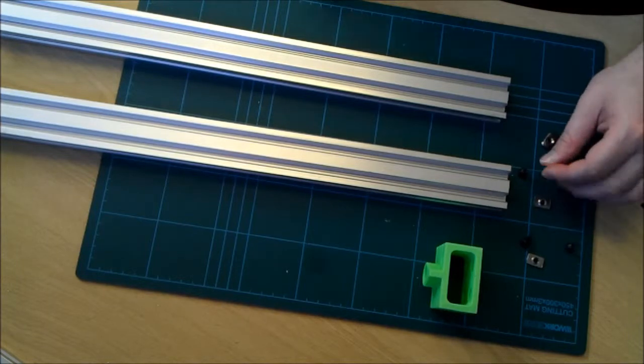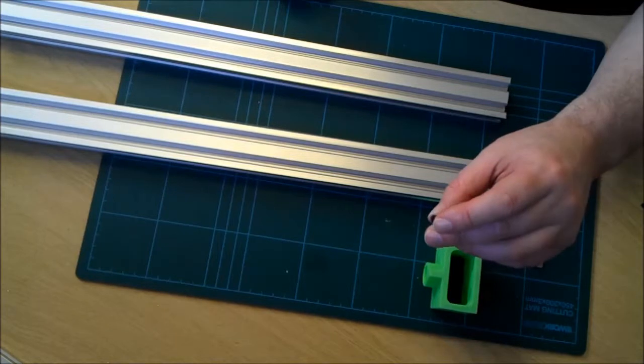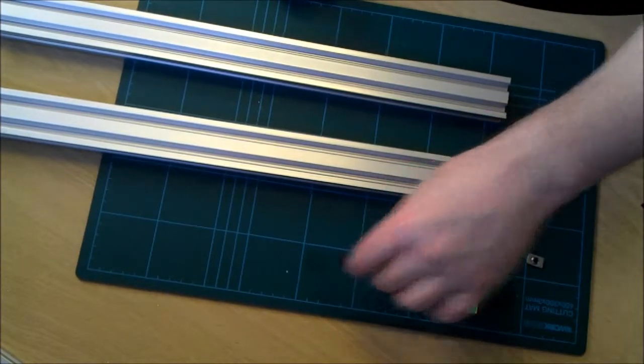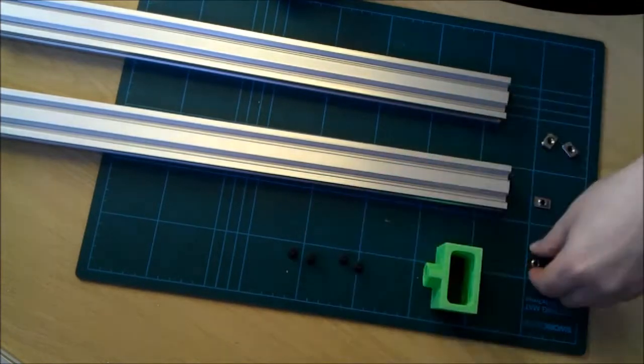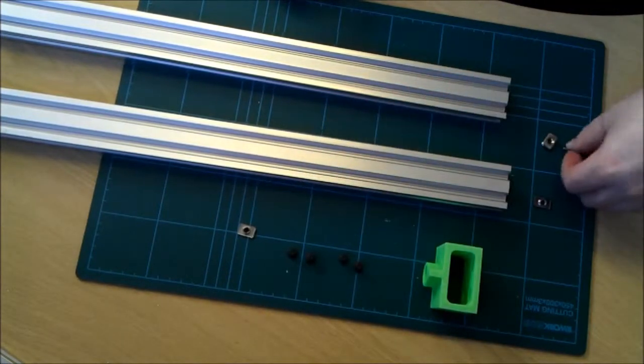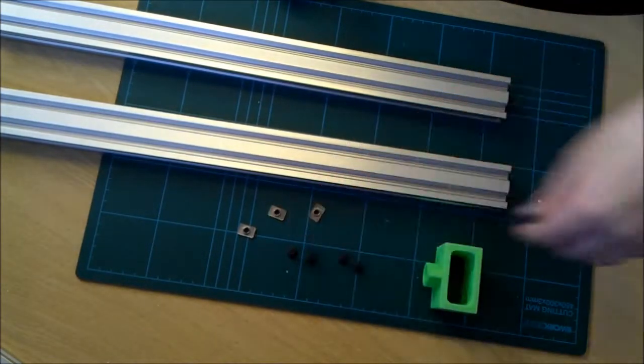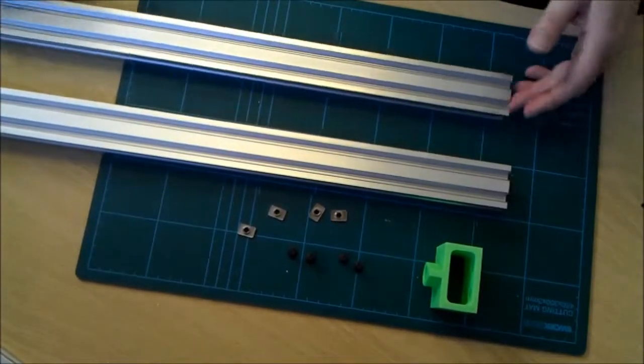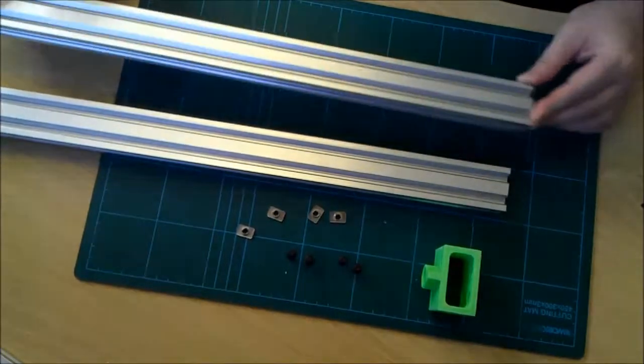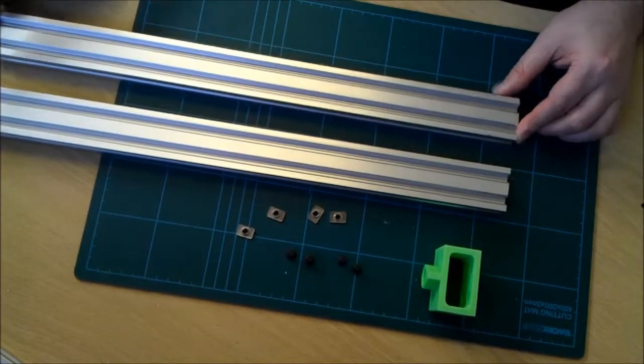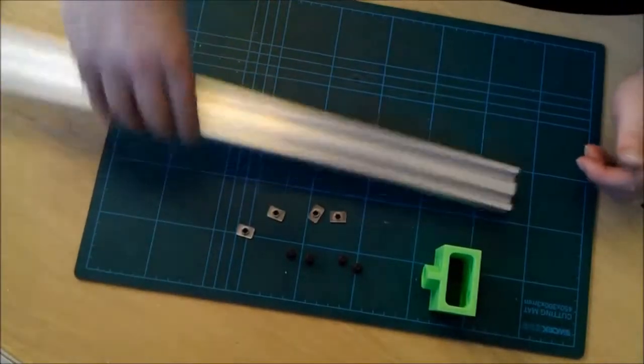What we need for this is four 8mm M5 bolts and these fiddly little T-nuts, and two lengths of 20x40x482 V-slot. Okay, let's put the V-slot to one side for a second.